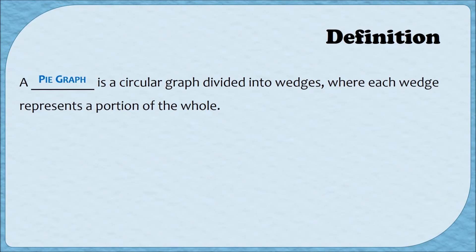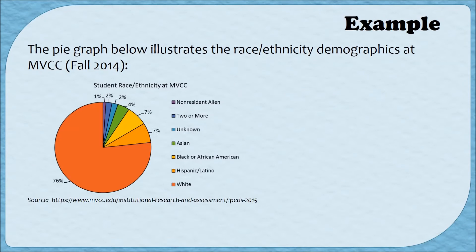A pie graph is a circular graph divided into wedges where each wedge represents a portion of the whole. Most often the wedges of a pie graph will be labeled with percentages. The pie graph below illustrates the race and ethnicity demographics at MVCC, based on the 2015 IPEDS report.